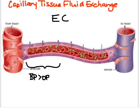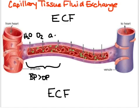Everything surrounding a capillary bed we call the ECF, which stands for extracellular fluid. The things that would diffuse into the ECF would be things that our body wants to keep — things like water, oxygen, amino acids, and glucose.